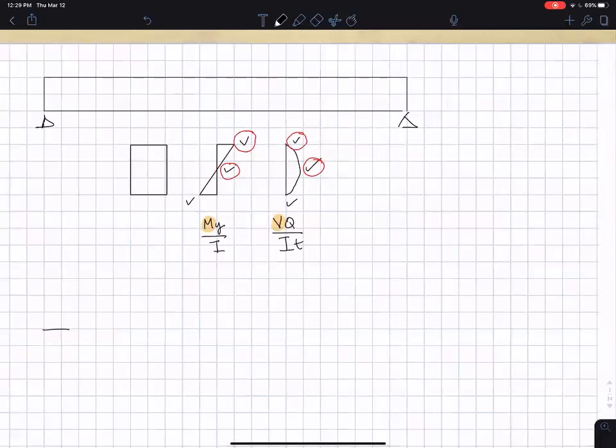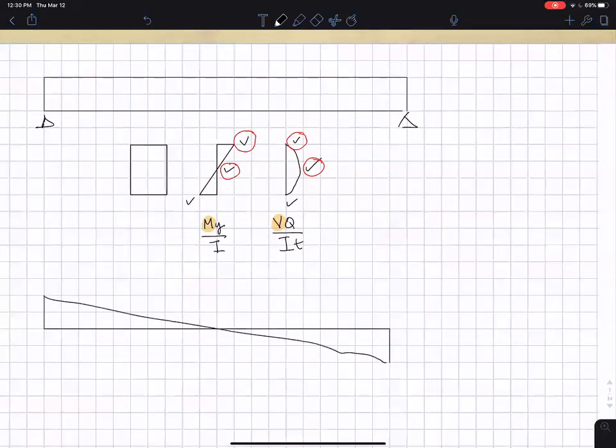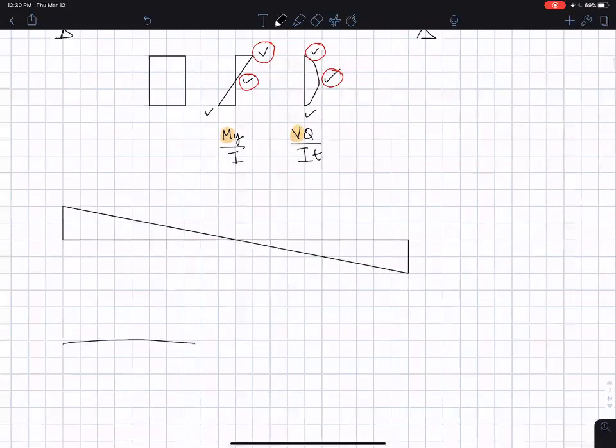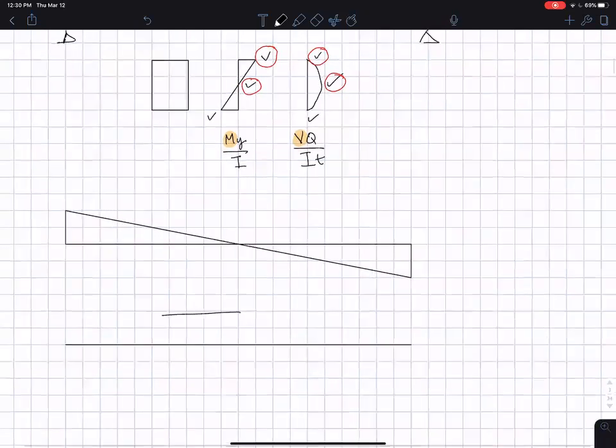Here we would have the shear diagram, maximum at the ends and zero in the middle. The moment diagram for a simply supported beam would be something like that, maximum in the middle where the shear is zero.